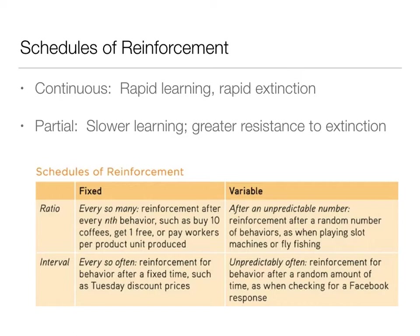Variable schedules are unpredictable — the organism doesn't know exactly how often or when the reinforcement will come. A variable ratio schedule means reinforcement comes after a random number of behaviors. Slot machines and fly fishing are great examples: you don't know when the win or catch will happen, but when it does, it feels really good and you're more likely to keep trying.